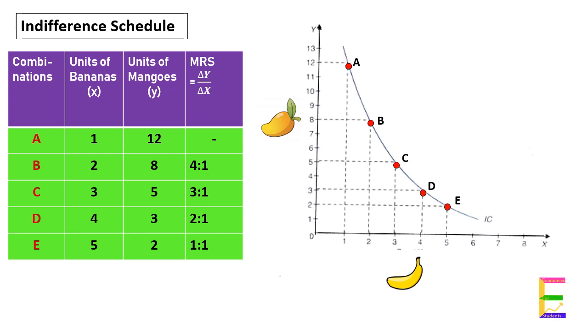When the consumer moves from bundle A to bundle B, he is willing to sacrifice four units of mangoes to gain one unit of banana. Here, change in Y is four units and change in X is one unit.